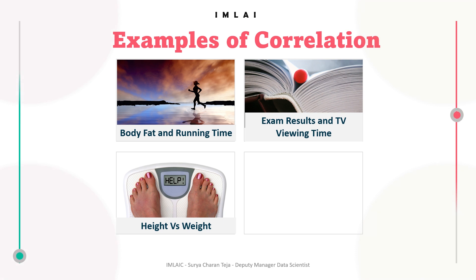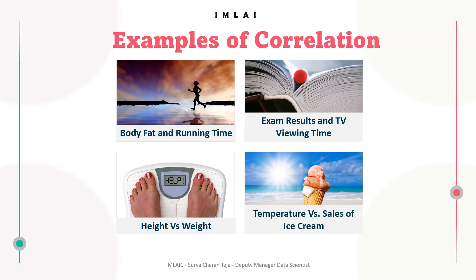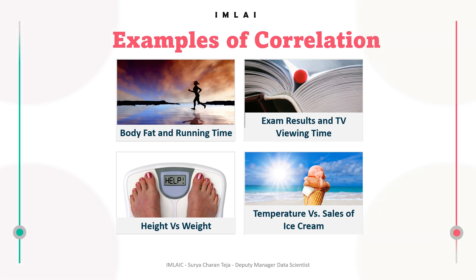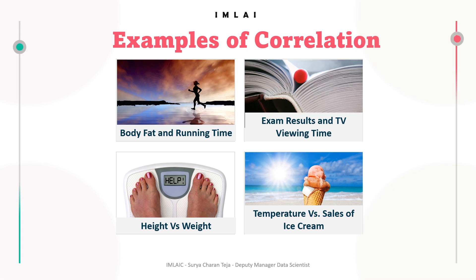The fourth example is temperature versus sales of ice cream. Temperature and overall ice cream sales have a favorable association. Since more people like to buy ice cream when it's hot outdoors, the company's overall ice cream sales tend to be greater when it's hotter outside. So ice cream sales are directly proportional to temperature, making them positively correlated, and we get a positive correlation coefficient.